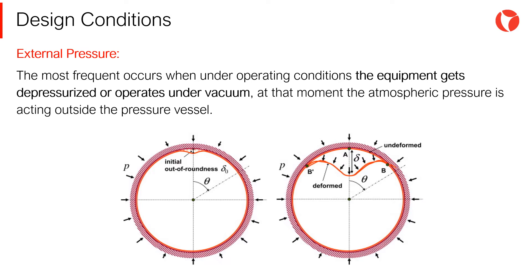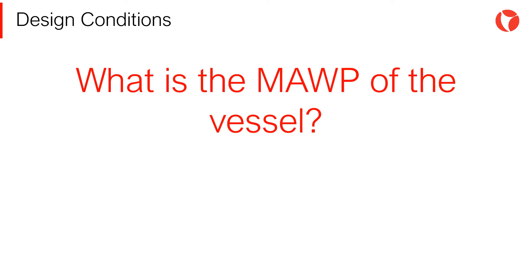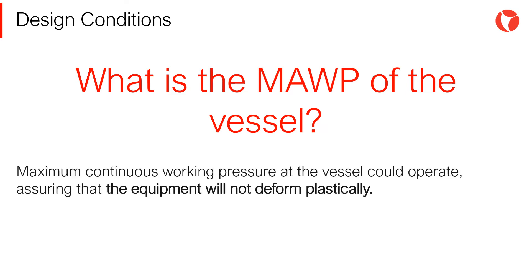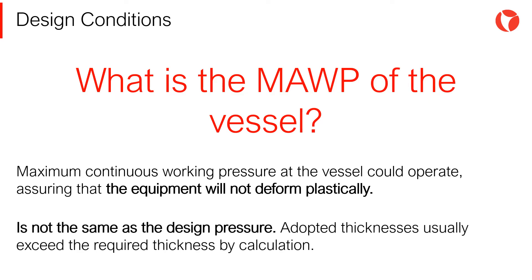A vessel may be under external pressure for many reasons. The most frequent occurs when, under operating conditions, the equipment gets depressurized or operates under vacuum. At that moment, the atmospheric pressure is acting outside the pressure vessel. The MAWP, or maximum allowable working pressure, is the maximum continuous working pressure at which the vessel could operate while assuring that the equipment will not deform plastically. The MAWP is not the same as the design pressure. Adopted thicknesses usually exceed the required thickness by calculation, and this excess is what generates the pressure jump up to the MAWP.